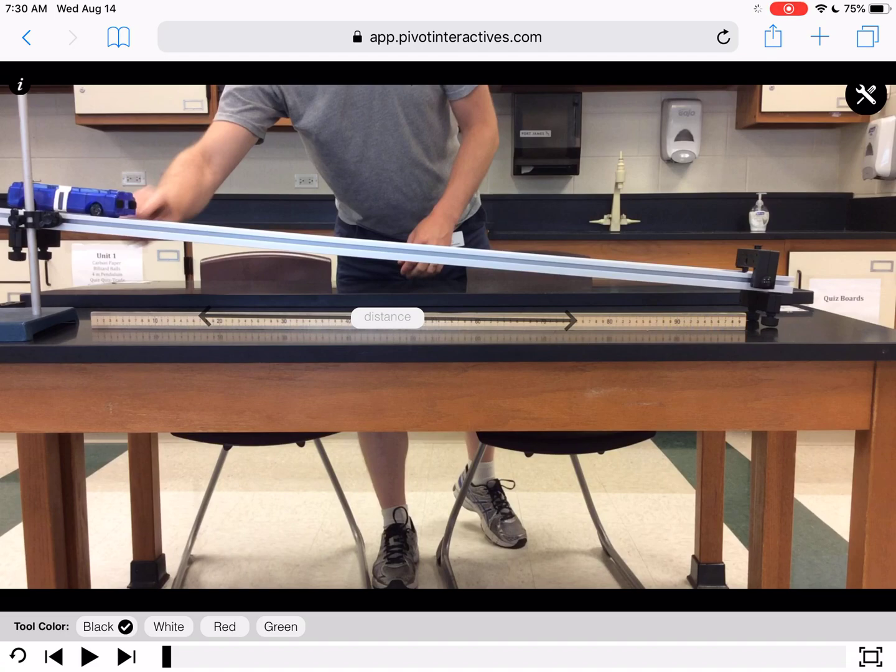Then look in the bottom left hand corner where it says tool color. This is just an option that you can change depending on the video, which tool colors are going to show up best.